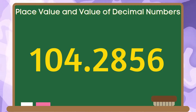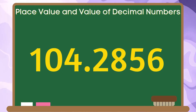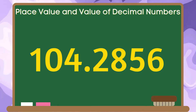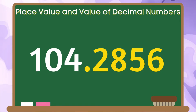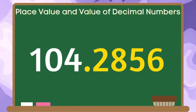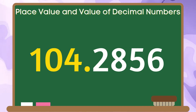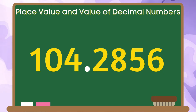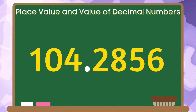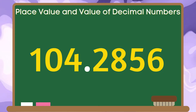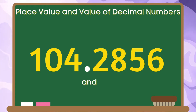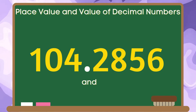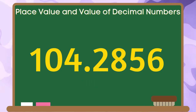This is an example of a decimal number. We have 104 for the whole number part and 2856 ten-thousandths for the fractional part. The decimal point goes between the ones and tenths place value. In reading decimal numbers, the decimal point is read as 'and.' Each digit of this number has its own place value.